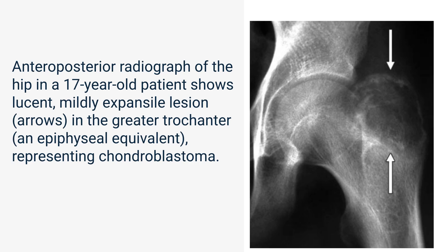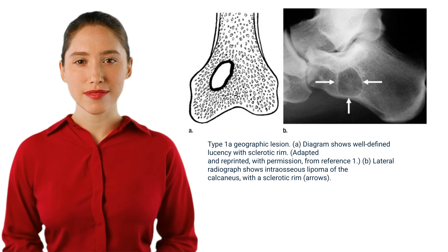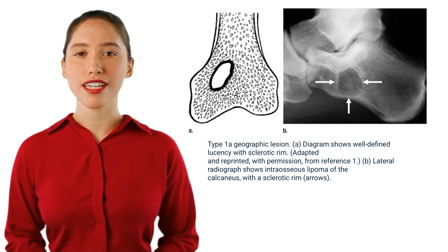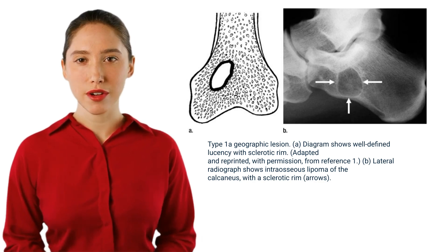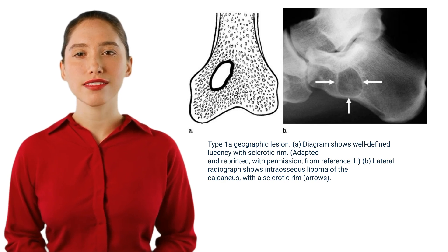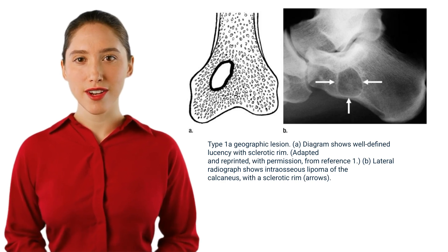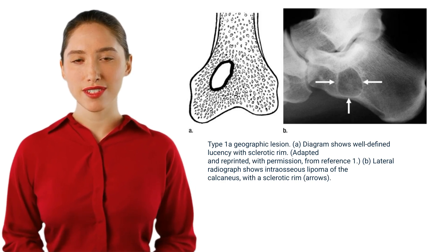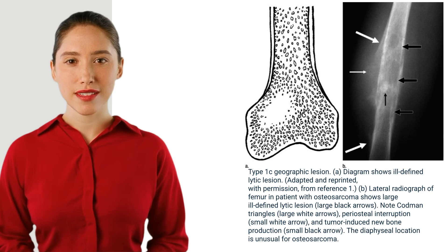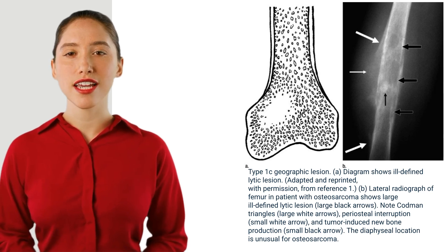Anteroposterior radiograph of the hip in a 17-year-old patient shows a lucent, mildly expansile lesion (arrows) in the greater trochanter — an epiphyseal equivalent representing chondroblastoma. Type 1a geographic lesion: diagram shows well-defined lucency with sclerotic rim. Type 1b: lateral radiograph shows intraosseous lipoma of the calcaneus with a sclerotic rim.